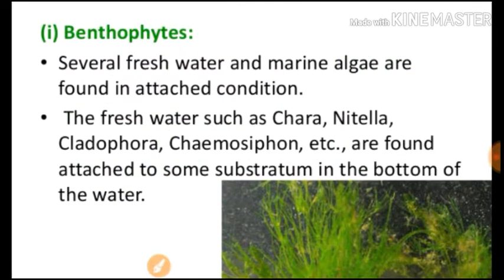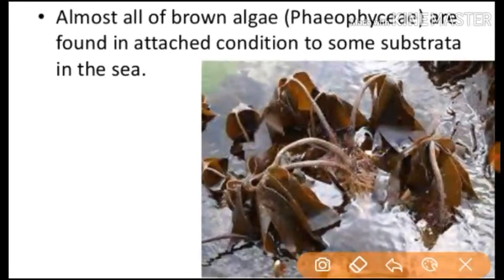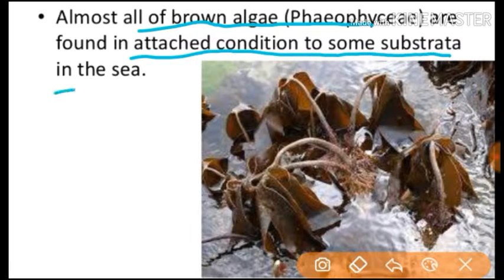Examples of bentophytes include Chara, Nitella, and Cladophora. Almost all brown algae (Phaeophyceae) are found in an attached condition to some substratum in the sea. So most brown algae are bentophytes because they are attached to the ground portion by their substratum.